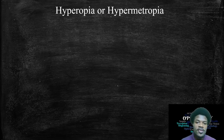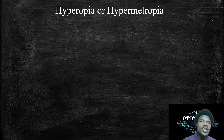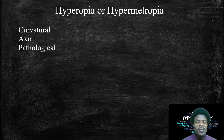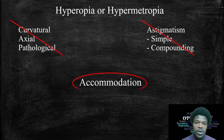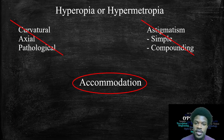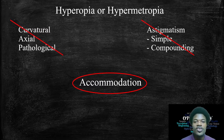Today we're looking at this from the perspective of hyperopia, also called hypermetropia or farsightedness — basically when you can see well into the distance. We're not looking at curvature, axial, or pathological hyperopia, nor the astigmatic perspective. We're looking at it from the accommodative perspective, because in practice we see accommodative anomalies like accommodative spasm, especially in kids and teenagers where accommodation can be excessive.